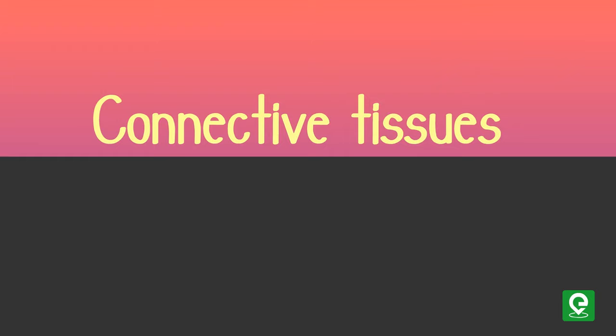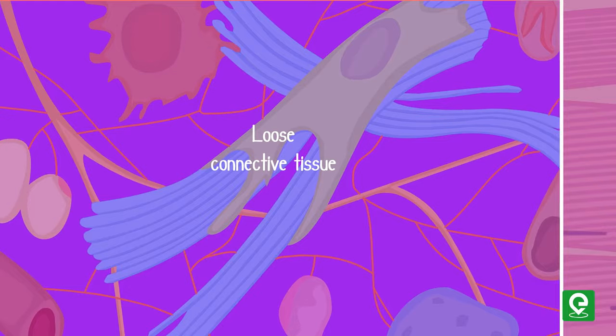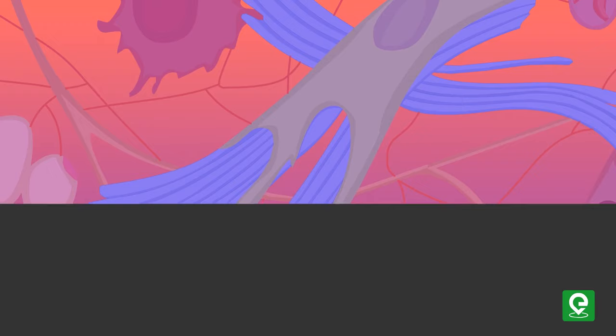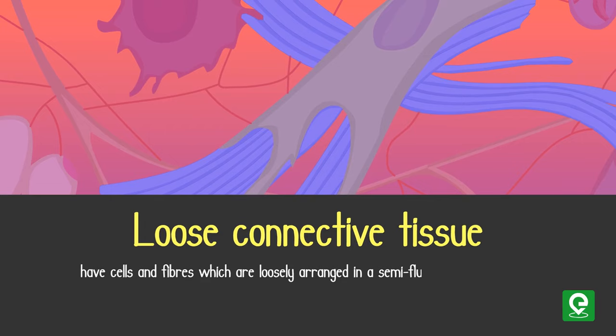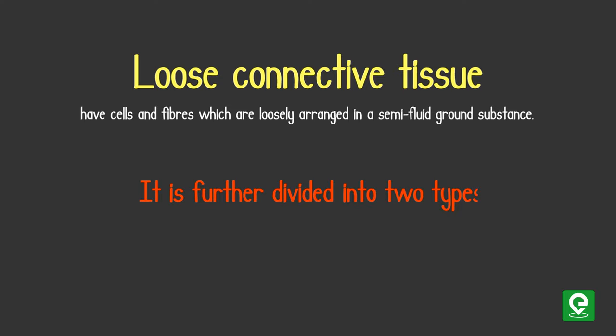Let's examine different types of connective tissue and their functions. Connective tissues are classified into three types: loose connective tissue, dense connective tissue, and specialized connective tissue. Loose connective tissues have cells and fibers which are loosely arranged in a semi-fluid ground substance. It is further divided into two types: areolar tissue and adipose tissue.